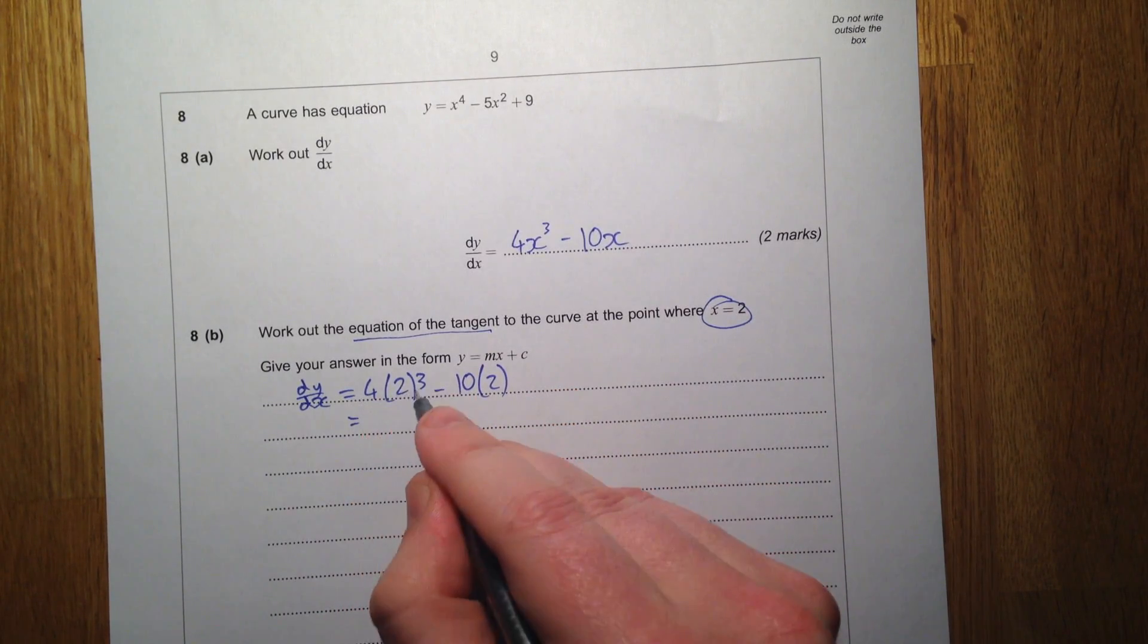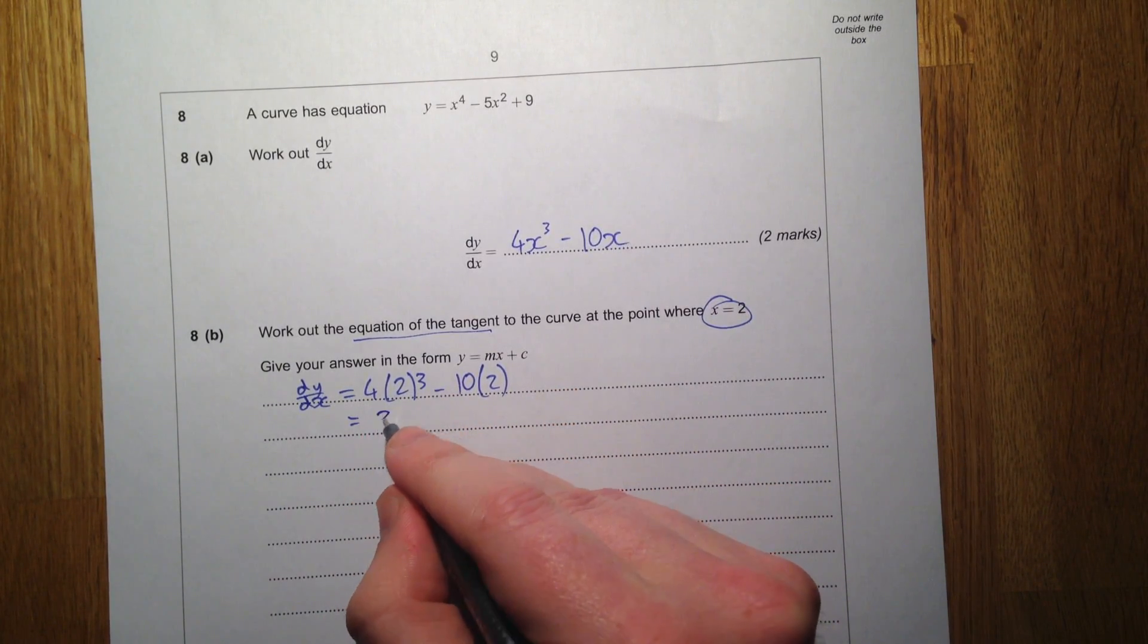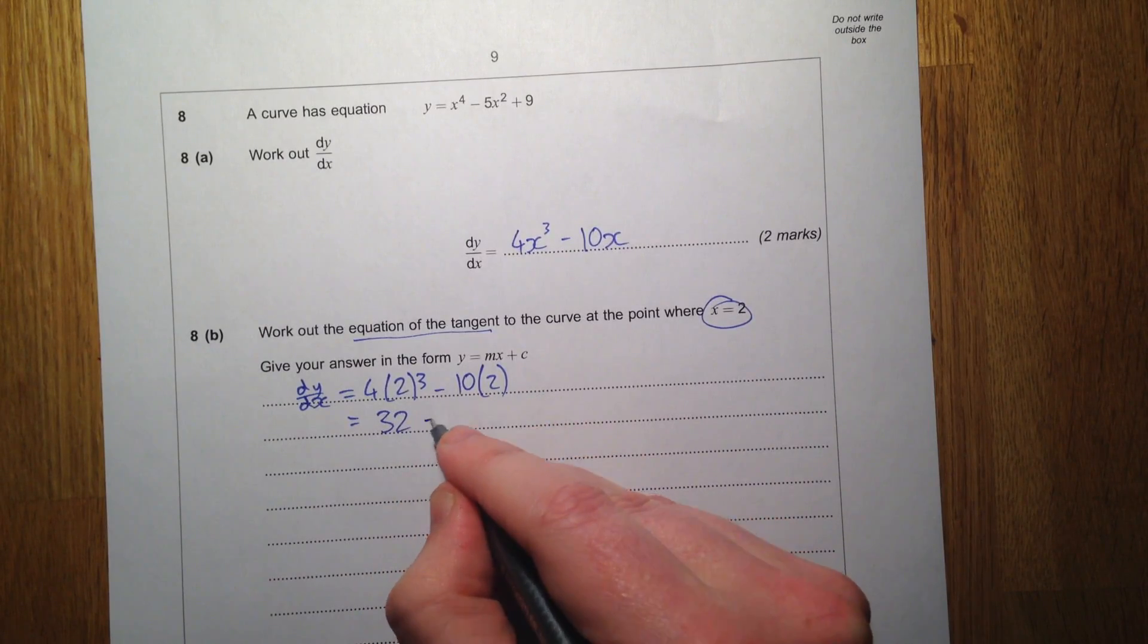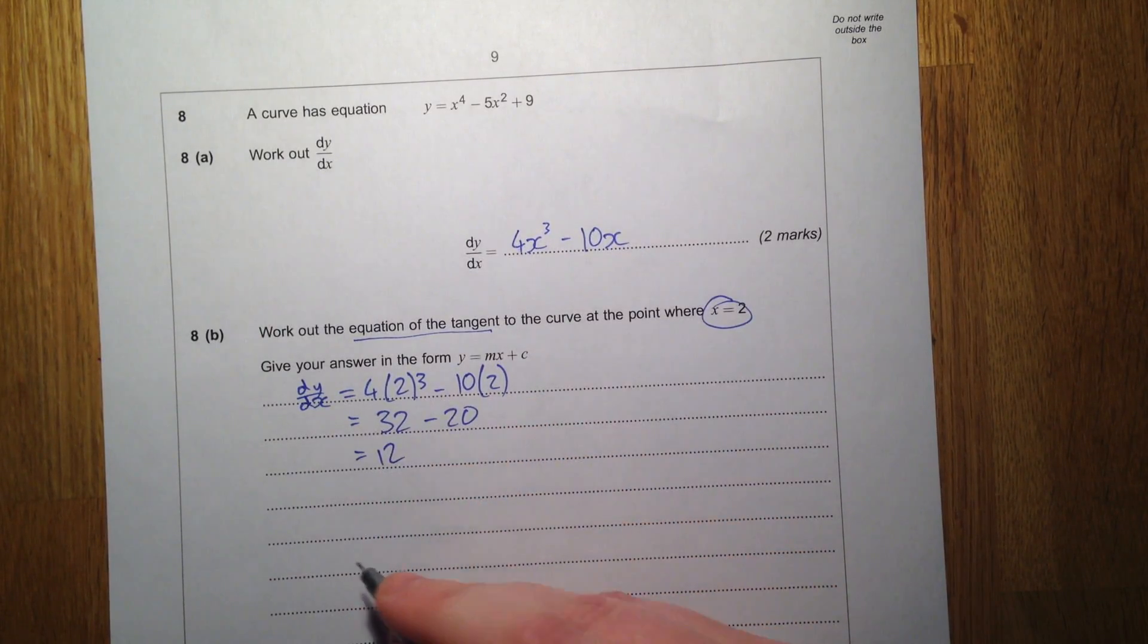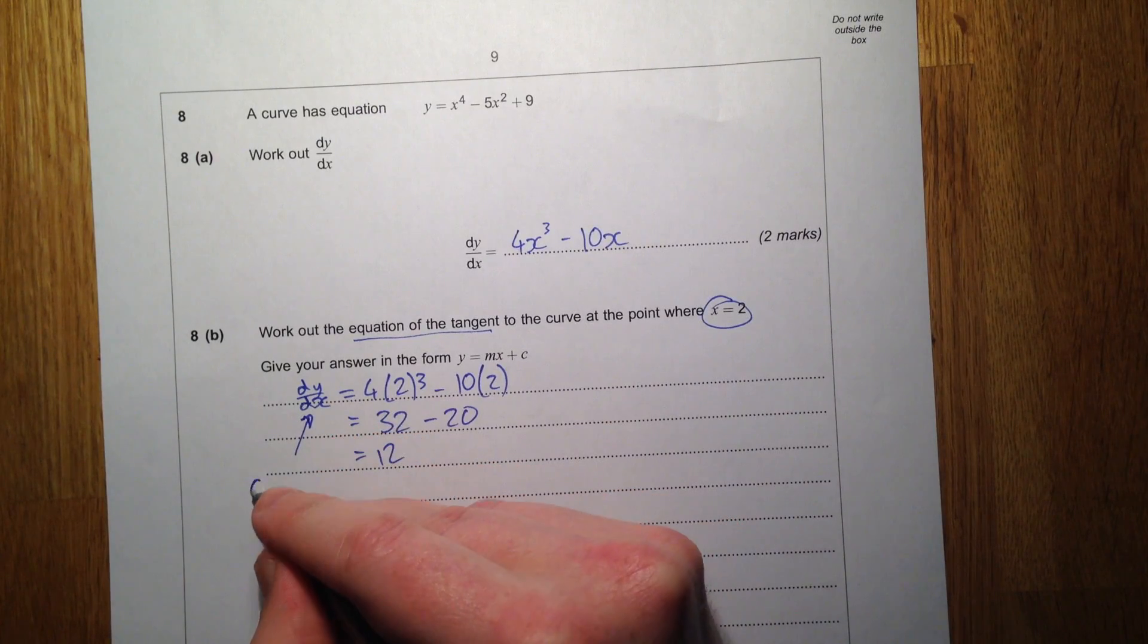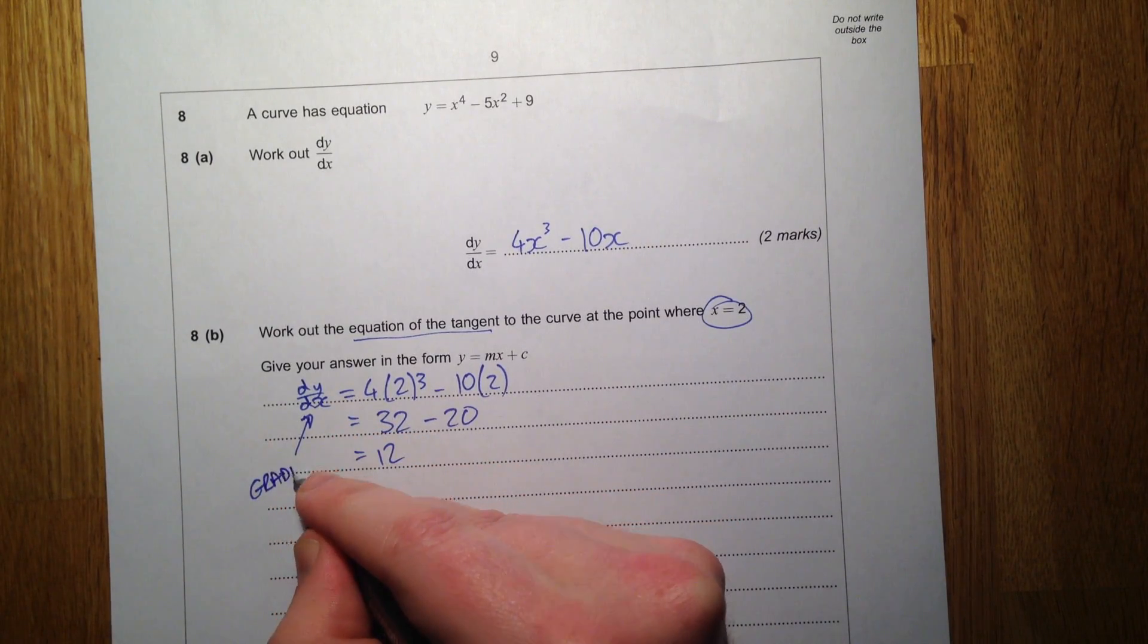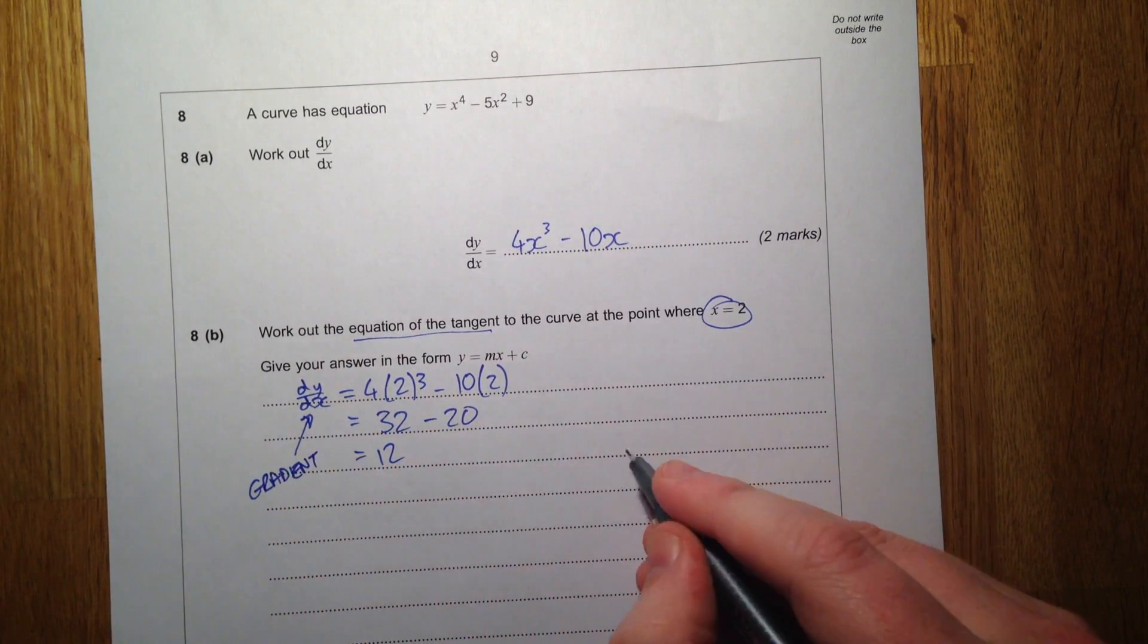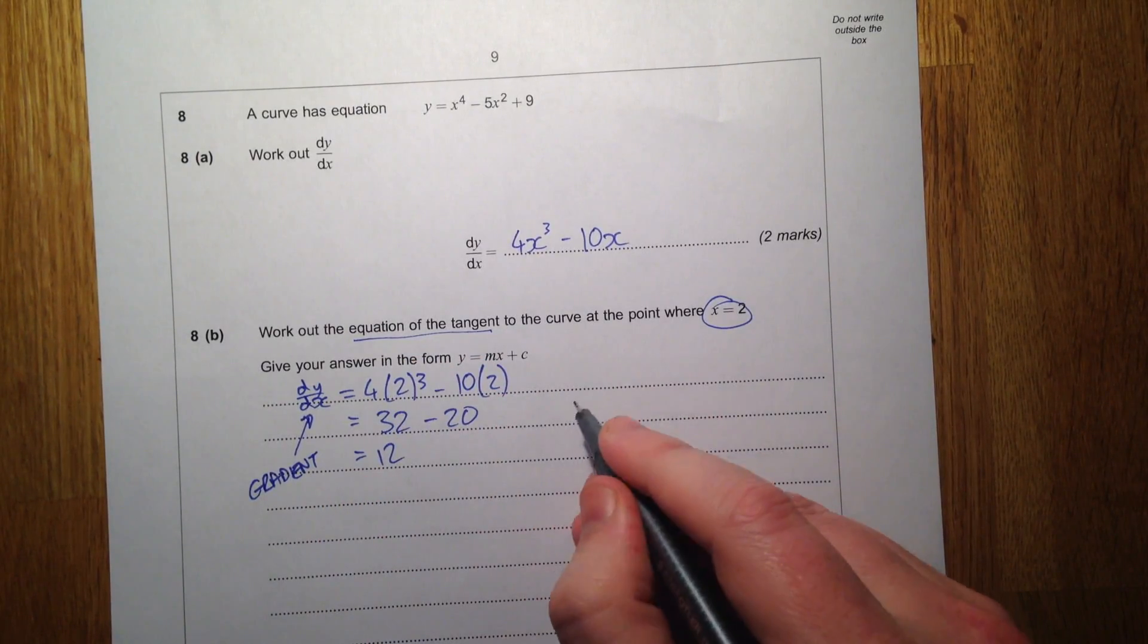2 cubed is 8, 4 lots of 8 is 32, this is 10 lots of 2, this is 20, so this is 12. This is the gradient of our tangent at that point.